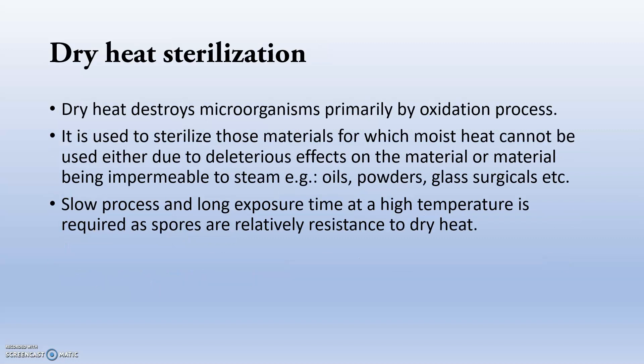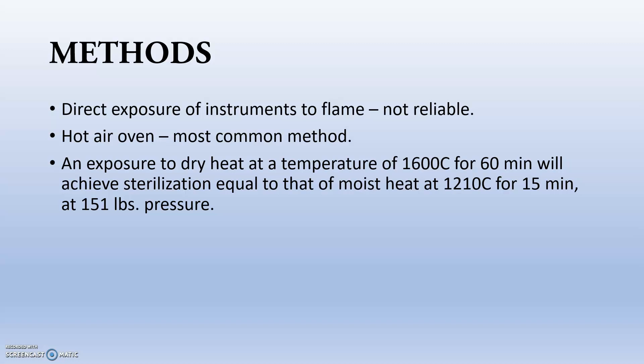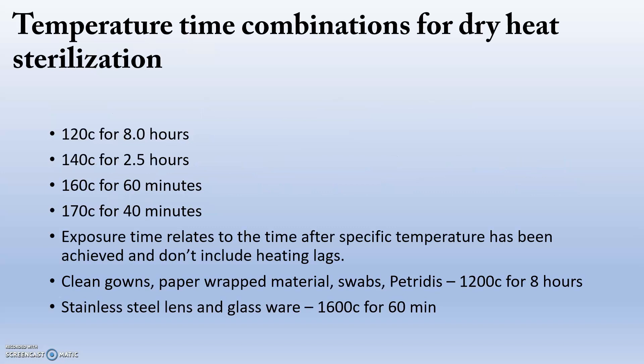In dry heat sterilization, dry heat destroys microorganisms primarily by an oxidation process. Methods include direct exposure of the instrument to flame, which is not reliable, but the hot air oven method is very common. An exposure to dry heat at 160°C for 60 minutes will achieve sterilization equal to that of moist heat for 15 minutes. Time-temperature combinations include 120°C for 8 hours, 140°C for 2.5 hours, 160°C for 1 hour, and 170°C for 14 minutes. Exposure time relates to the time after the specific temperature has been achieved.